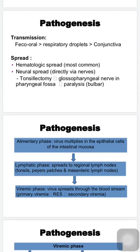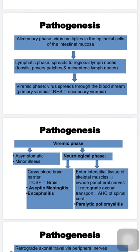The most common route of transmission is the feco-oral route — ingestion of contaminated food and water. Less common routes are respiratory droplets and direct inoculation into the conjunctiva. Spread is mainly by the hematogenous route. There can also be direct neural spread, especially following tonsillectomy, where the virus enters through the glossopharyngeal nerve causing bulbar-type paralysis. Once the virus enters the alimentary tract, it multiplies in the epithelial cells of the intestinal mucosa — this is the alimentary phase.